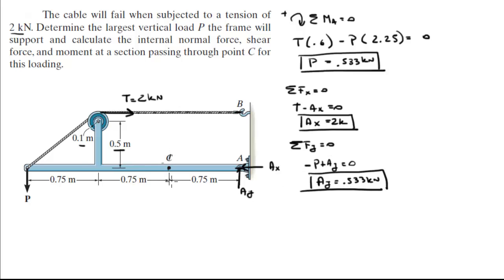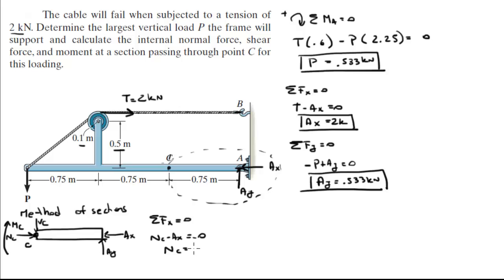So now we are going to use the method of sections to solve for the internal forces at C. The section inside the dotted line, this is C, this is the normal at C, this is the shear at C, and this is the moment at C. This is AY and this is AX. Sum of the forces on the X is equal to 0 so you know that the normal minus AX is equal to 0 which means that the normal is equal to AX at 2 kN.